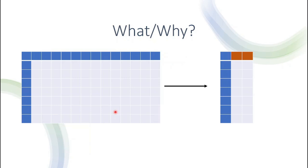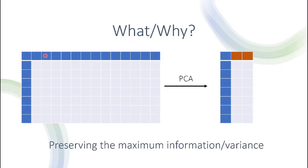In dimensionality reduction, we start off with a large number of features and then reduce them. The simplest case might be to just choose the first two features, but maybe those features are not very representative of the data. That's where PCA comes in. PCA is a closed-form solution — we could think of it as a formula — that merges your features together while preserving the maximum amount of information. Another way to say information in our case would be variance. The exact definition of PCA is reducing the number of features while preserving the maximum amount of variance.